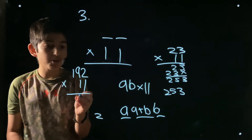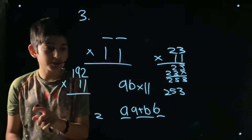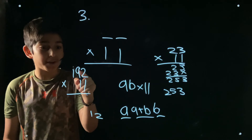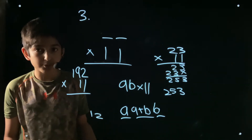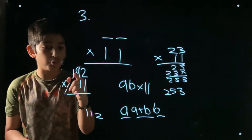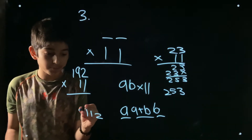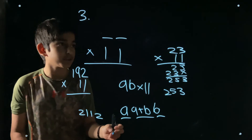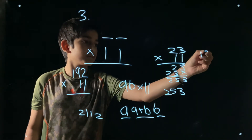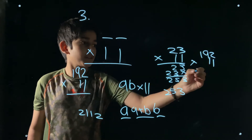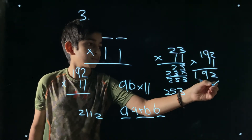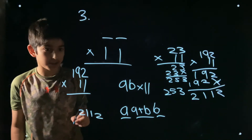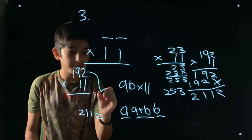For three-digit numbers, take 192 multiplied by 11. Place the last digit 2 at the end. Add the last two digits: 2 plus 9 is 11 — write 1, carry 1. Then 9 plus 1 plus carry 1 is 11 — write 1, carry 1. Then 1 plus carry 1 is 2. The answer is 2112. We can verify this and it's correct.